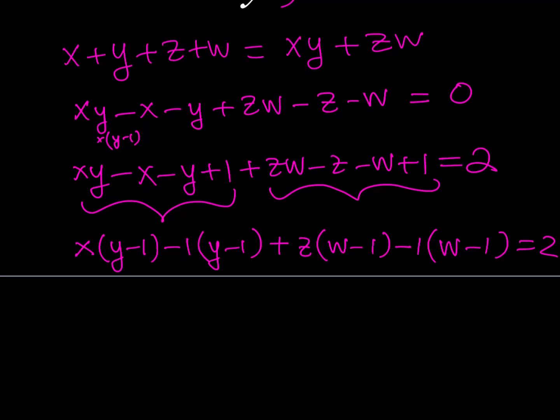Now it's not completely factorable, but you're basically going to be getting 2 things that are added, which will make a solution easier. So this gives us (x minus 1) times the quantity (y minus 1), plus the quantity (z minus 1), multiplied by the quantity (w minus 1), and the sum is equal to 2.